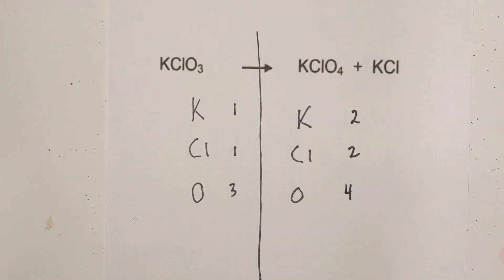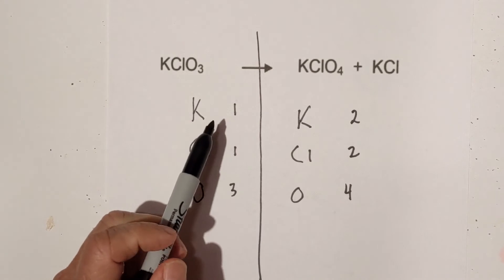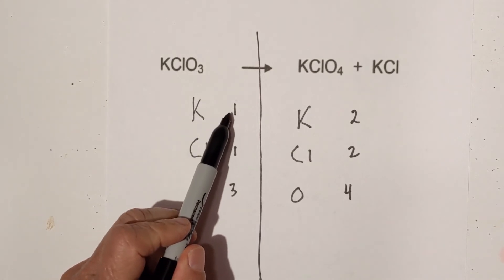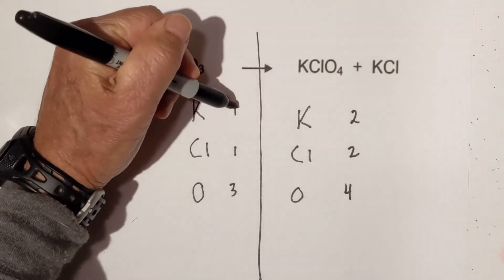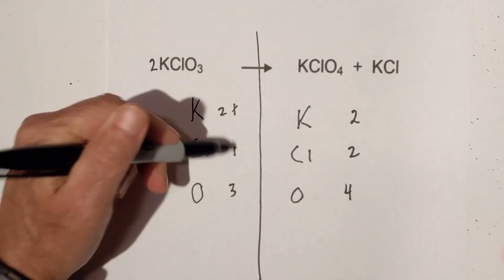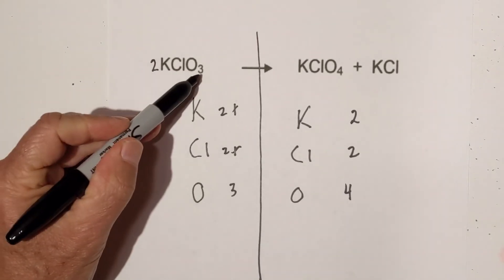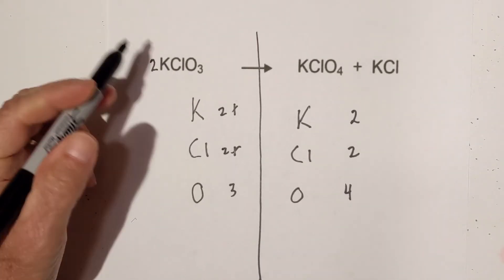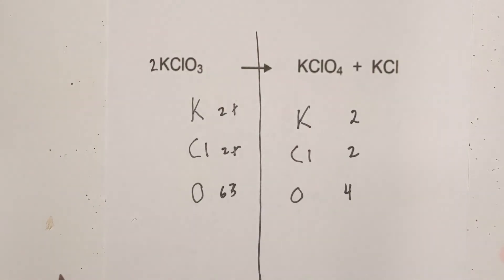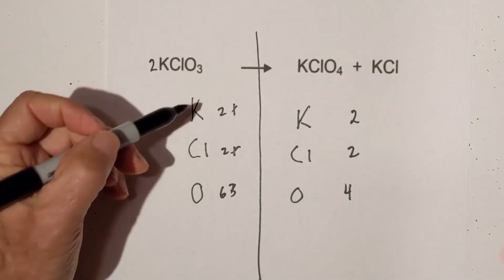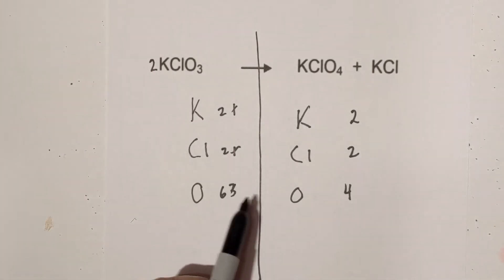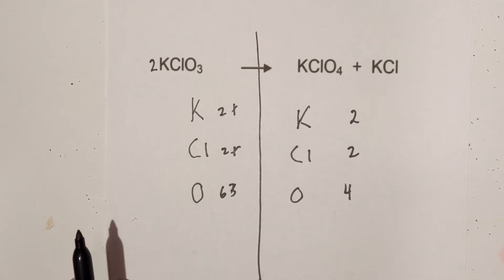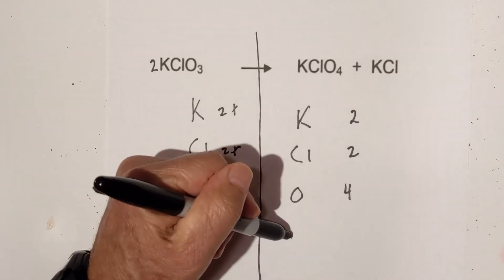Let's see what's balanced. Start with the metals: we have one and two, so I'm going to multiply this by two — this becomes two. But now the chlorine becomes two as well. And then two times three becomes six. So the potassium and chlorine are all balanced. But now I have a problem with the oxygen: we have six and four. What's the smallest number both of these numbers will go into? That is twelve.